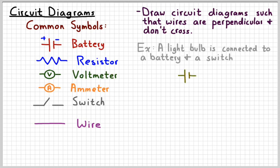There's our battery. There's a wire connected to a switch. Connect the light bulb to the other side of the switch. And then a wire connected back to the other side of the battery. So that we have a complete conductive path.